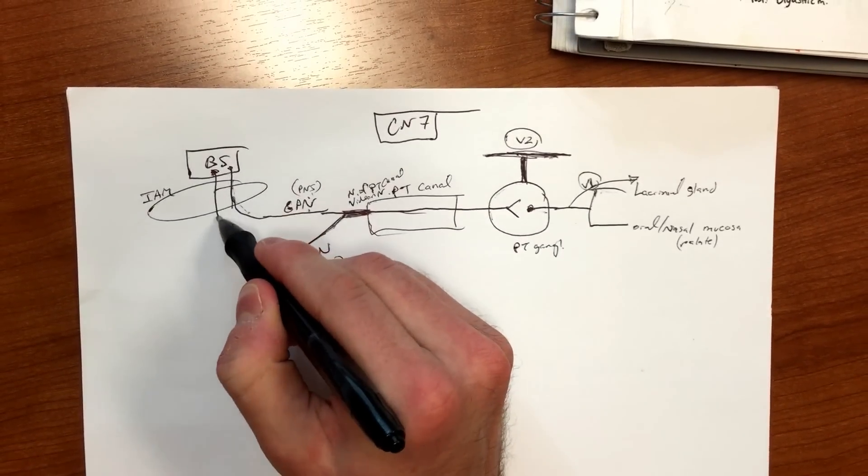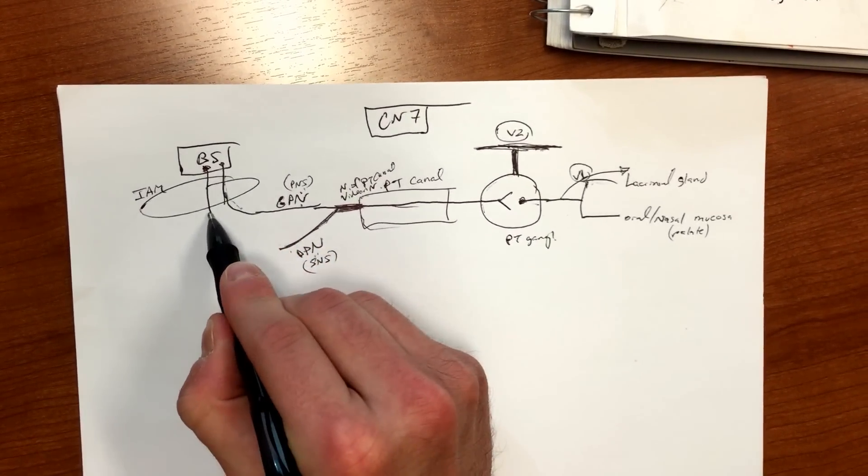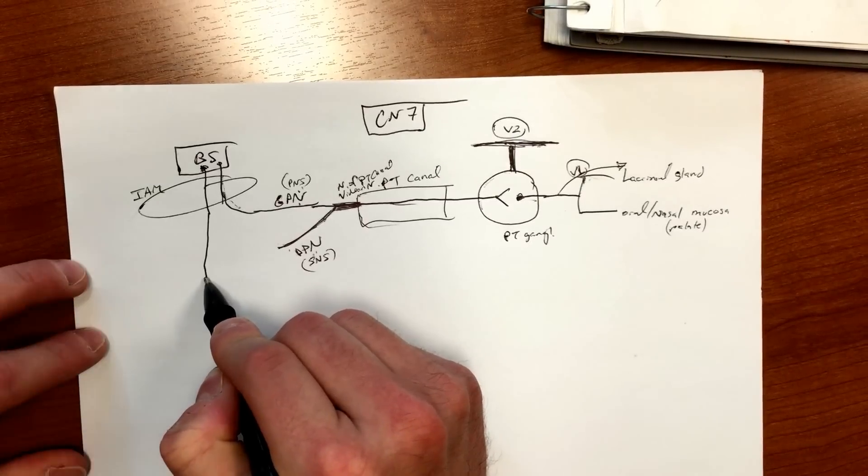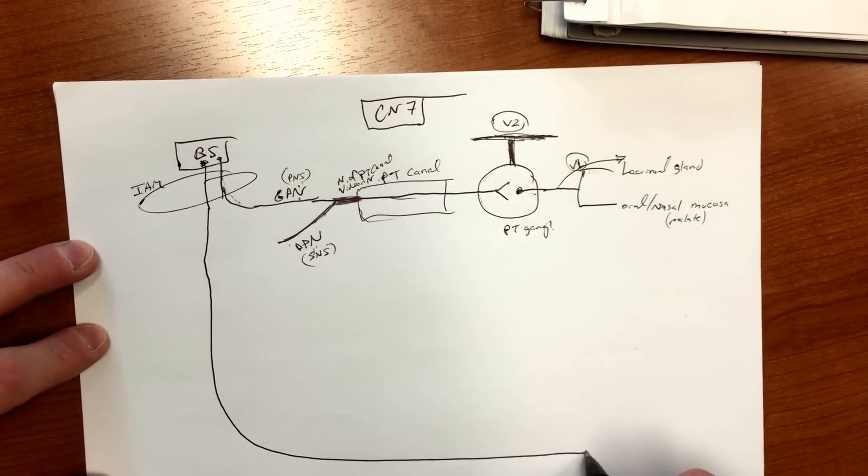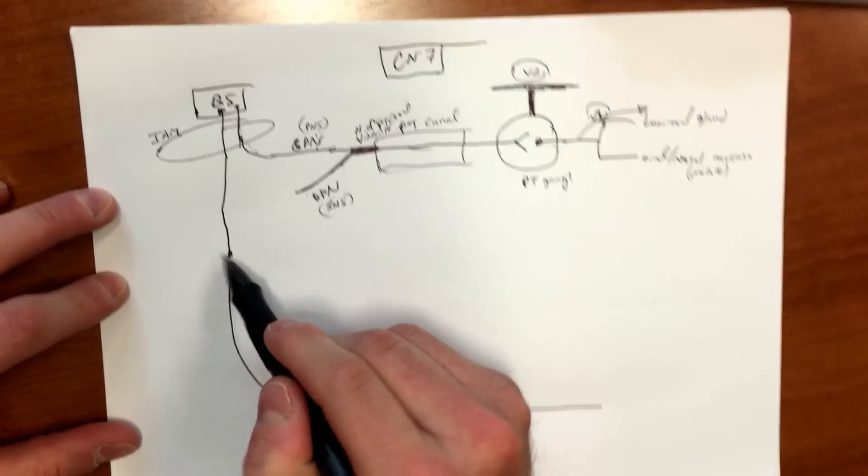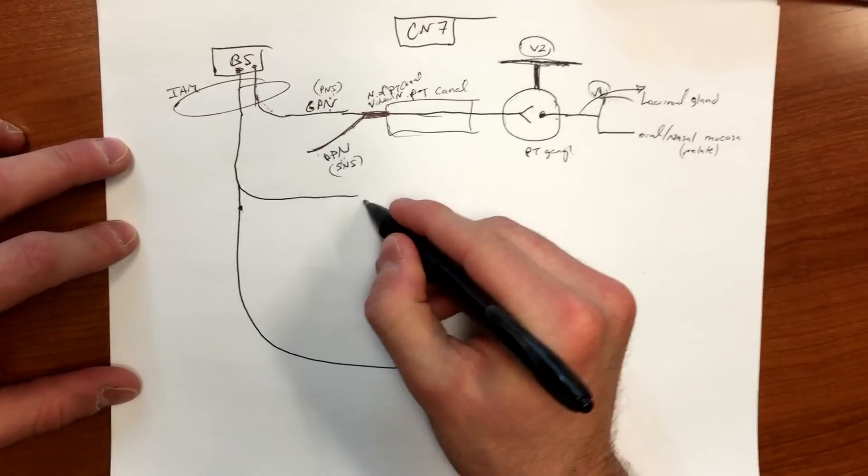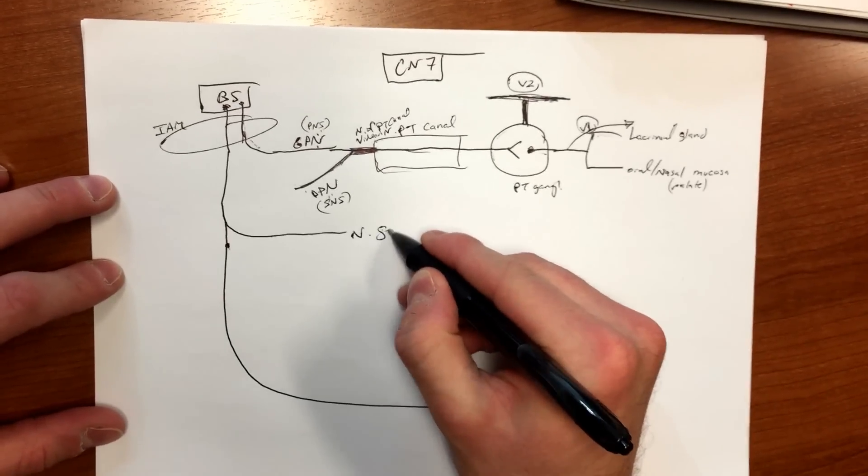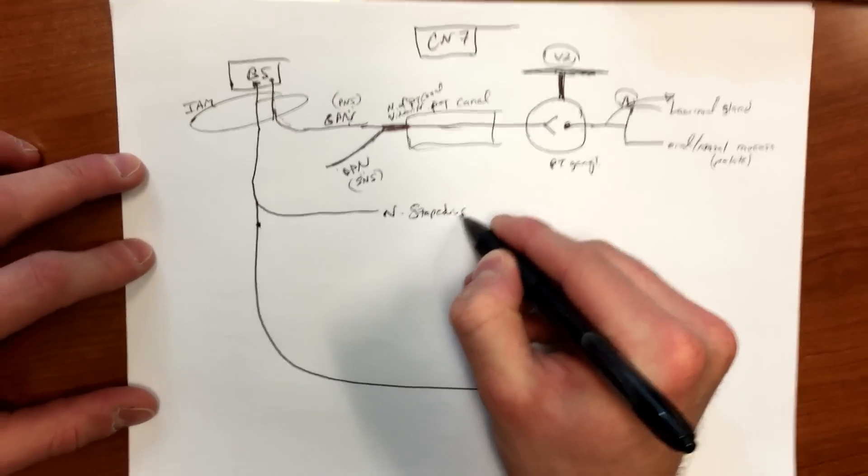So motor fiber is gonna come out, cell body of origin from the brainstem, go through internal auditory meatus. And as you're going down, maybe I'll draw it like this - coming down.